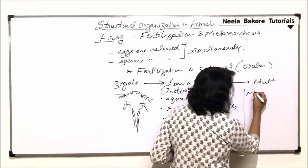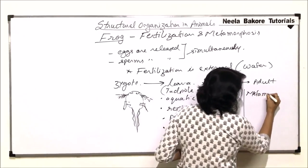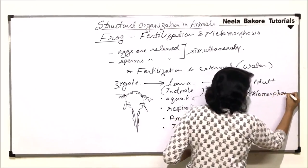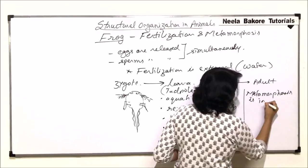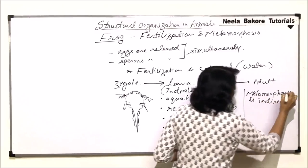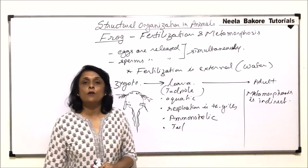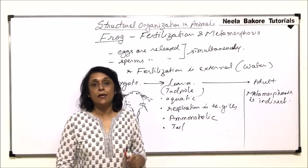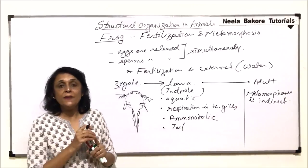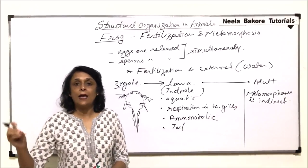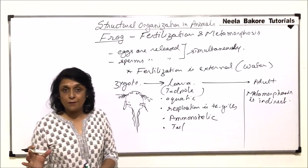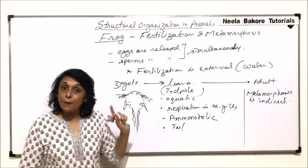So in case of frogs, metamorphosis is indirect. Whenever there is an intermediate stage, then that metamorphosis is known as indirect. If from the egg, a young one comes out or hatches, then we call it a direct development. Here it is indirect.